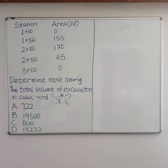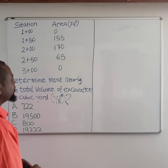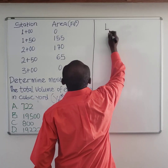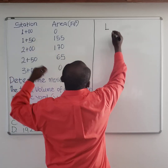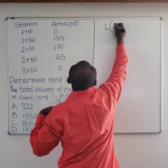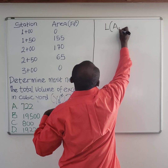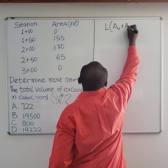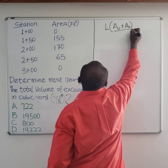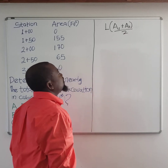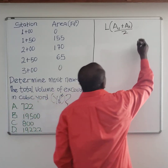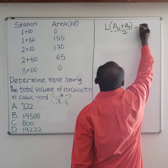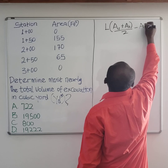We're going to use a method called the average end method. The average end method states that the volume equals the length between stations multiplied by the average of station 1 and station 2 areas. That's what we call the average end method.